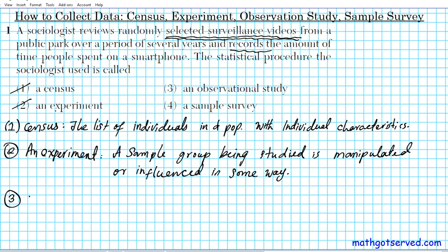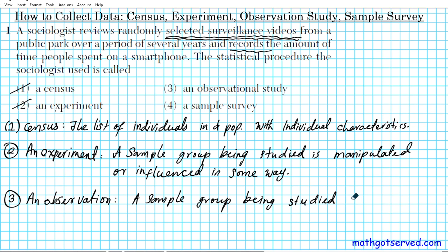How about option three — an observational study? This is definitely what's going on here. In an observational study, the sample population being studied is just measured as they are. There is no manipulation or questioning whatsoever. For an observation, you just look and record. And that's exactly what's happening here — the sociologist is just looking at the videos and recording the amount of time people spend on their cell phones. So the statistical procedure the sociologist used in this scenario is an observational study. That's the answer.